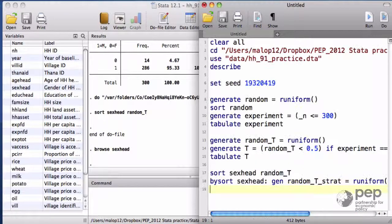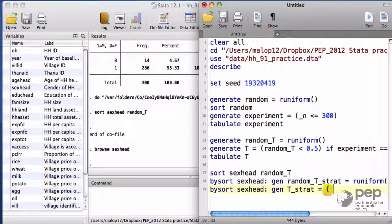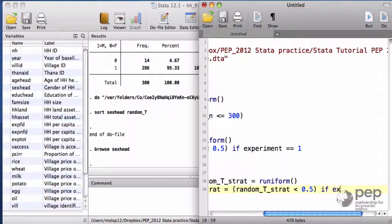This is the lottery ticket, right? The assignment is similar, by sort, sex head, and create an assignment variable T_strat within each group that takes the value of 1 if the random number is below the median.